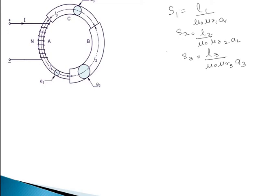Here S1, S2, S3 are the reluctances of parts A, B, and C respectively. Similarly μr1, μr2, μr3 are the relative permeabilities of parts A, B, and C. Permeability is the property of the medium in which we keep the magnetic material. There are three types of permeability: absolute permeability, permeability of free space, and relative permeability. The basic formula for permeability is μ = B/H.